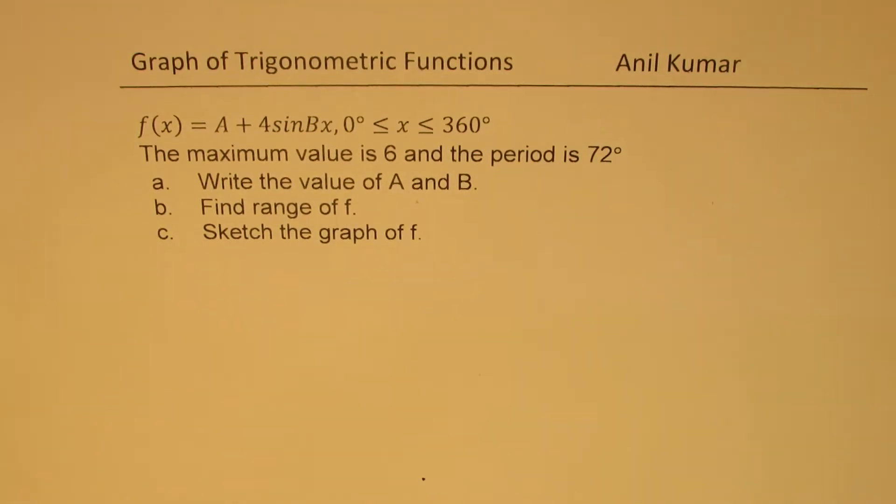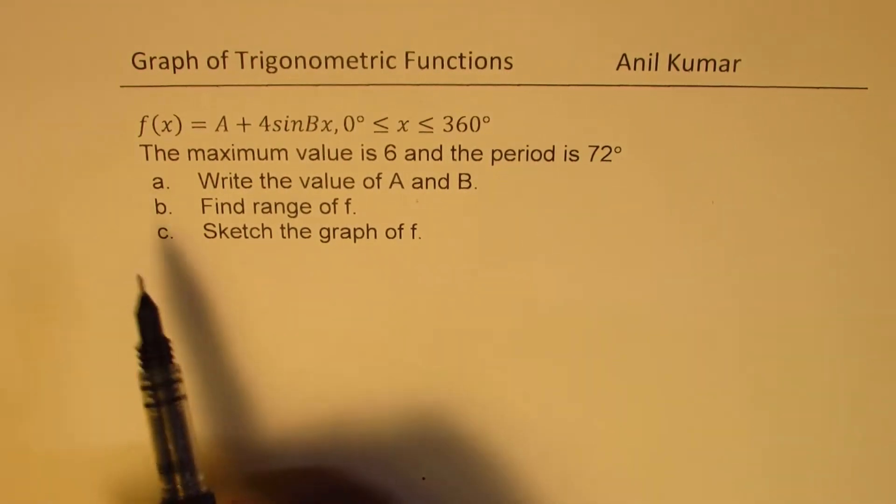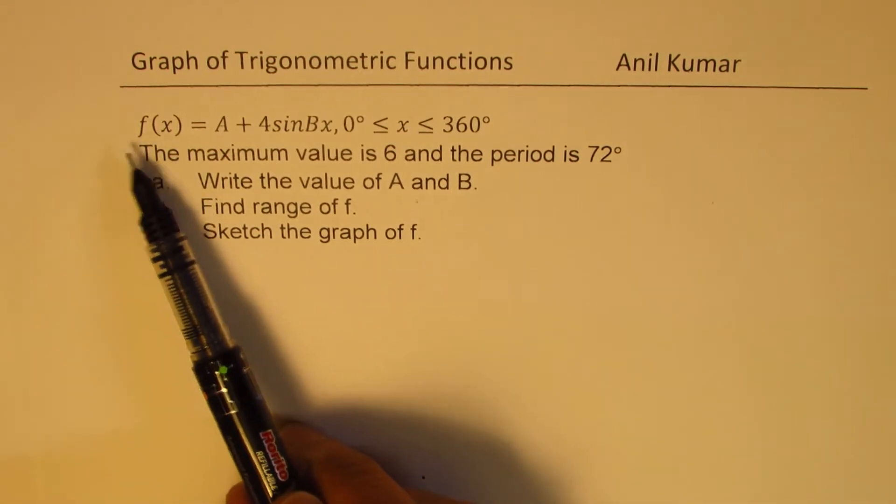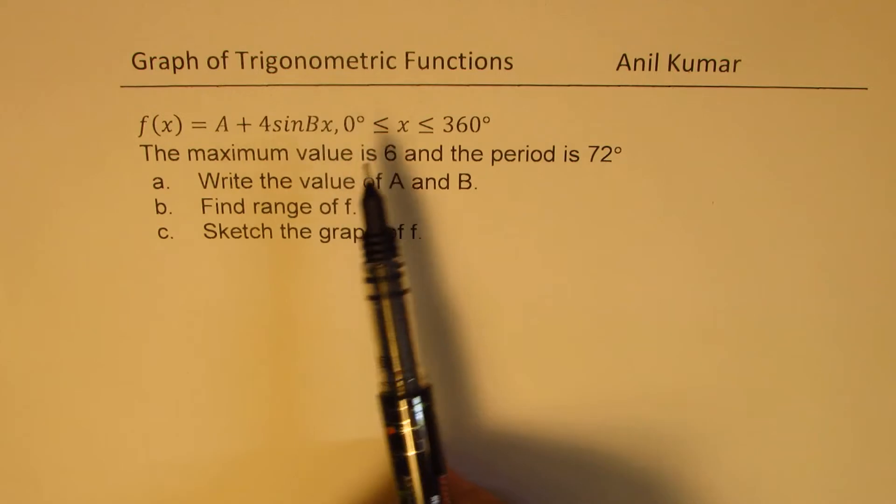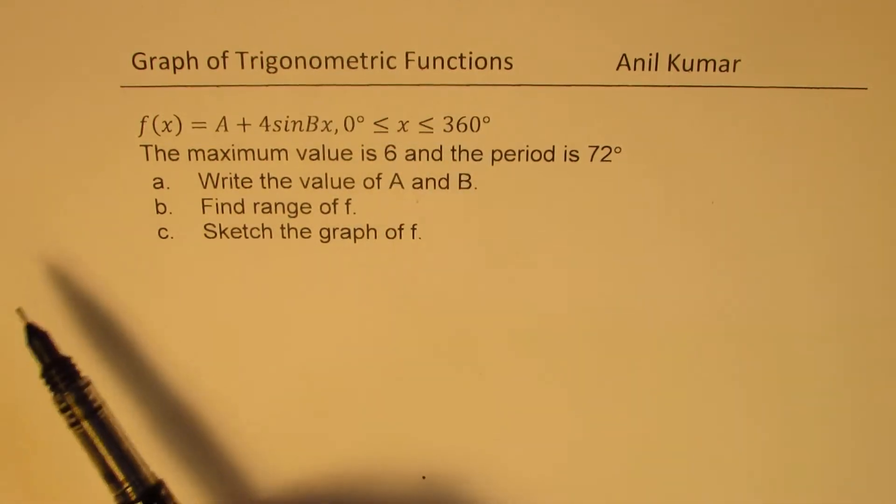I'm Anil Kumar. Welcome to my series on trigonometric functions. The question here is, f(x) is equal to A plus 4 sin Bx, where x is between 0 degrees to 360 degrees.